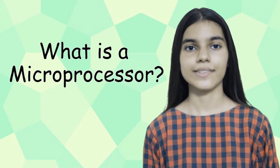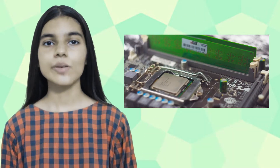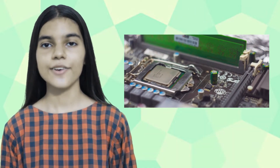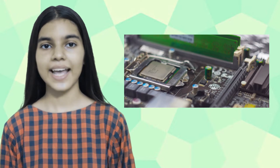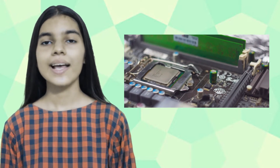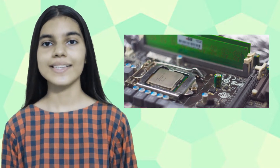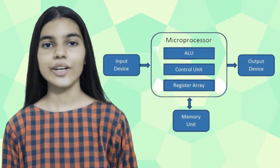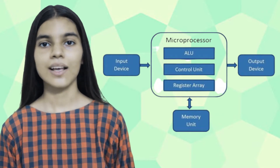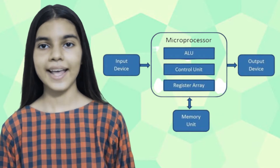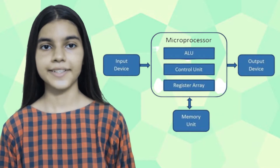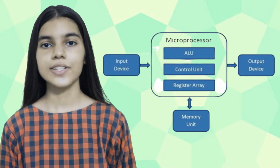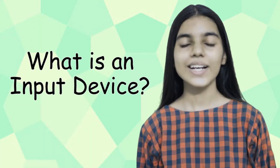What is a microprocessor? A microprocessor is a computer processor where the data processing logic and control is included on a single integrated circuit. The microprocessor contains the arithmetic logic and control circuitry required to perform the functions of a central processing unit.